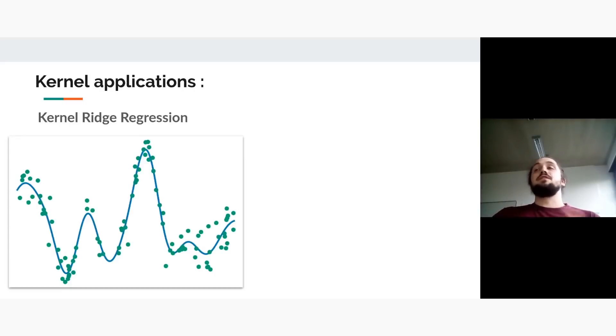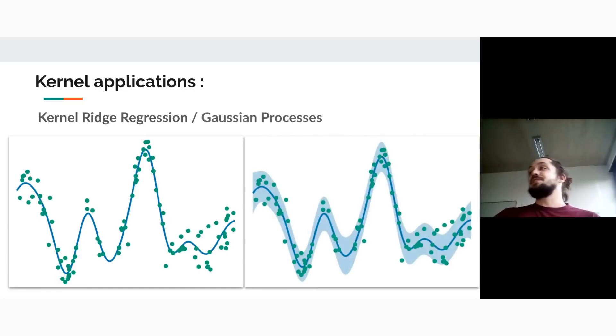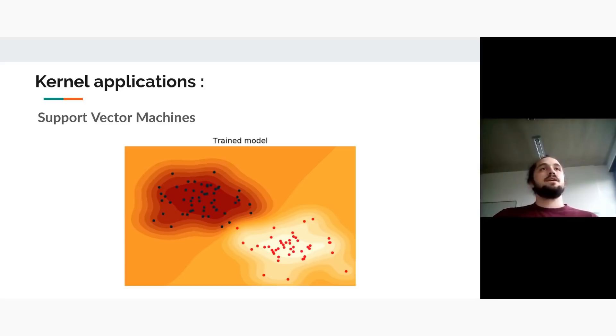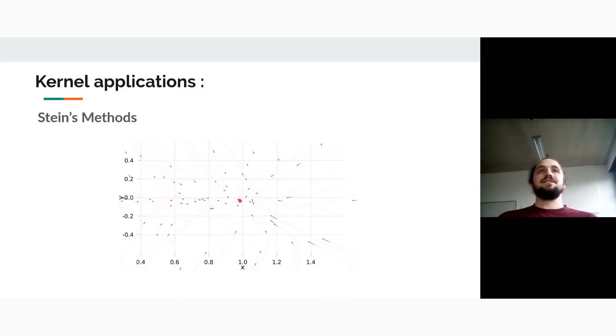So kernel functions have a lot of applications. One of them is kernel ridge regression, which is kind of the one introduced so far. And its Bayesian counterpart would be Gaussian processes. We can do PCA with a kernel method, which allows you to work with non-linear kind of features, support vector machine for classification, and more recent advances like Stein's method to approximate a certain distribution via particles. And particles are interacting with each other via these kernel functions.